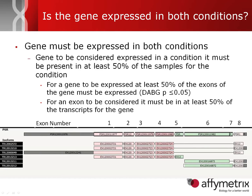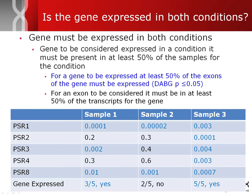How do we determine whether a gene is expressed? First, at least 50% of the samples must express that gene for it to be called expressed in a condition. To determine whether a gene is expressed, at least 50% of its exons must be expressed. To count toward this, an exon must be present in at least half of the transcripts for the gene. For example, with eight exons numbered one through eight, exons five, six, and seven are not present in at least four of the transcripts, so they are excluded from consideration.